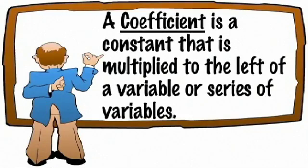A coefficient is a constant that is multiplied to the left of a variable, or series of variables.